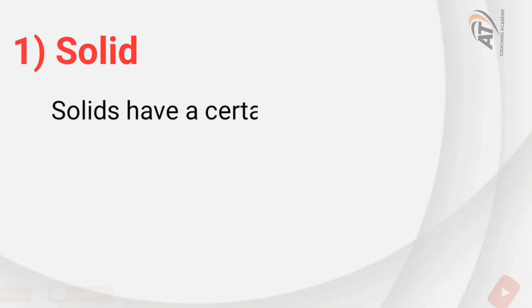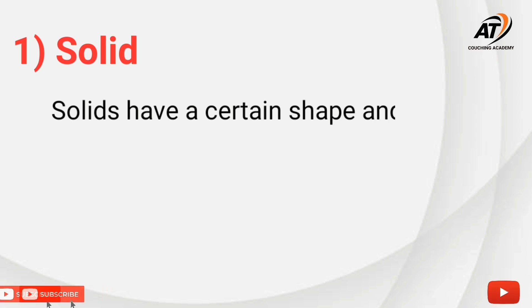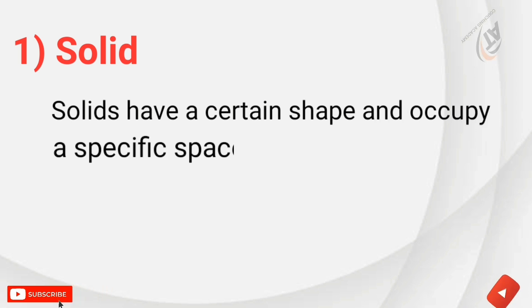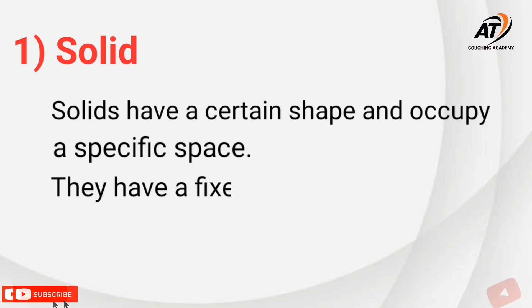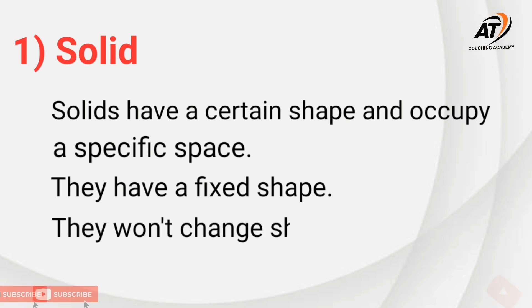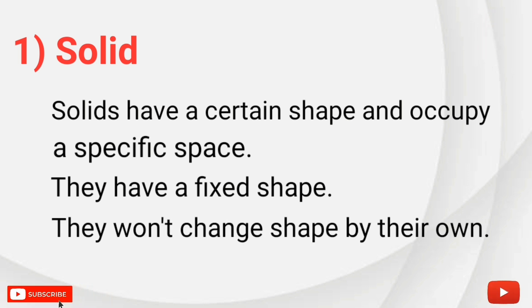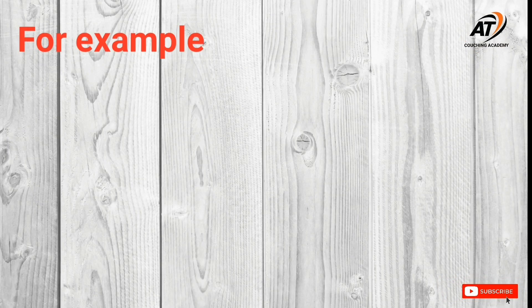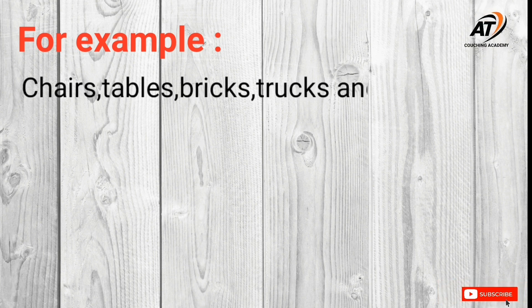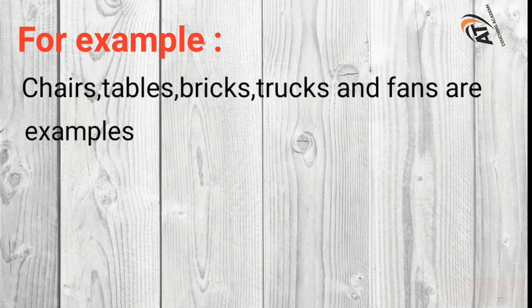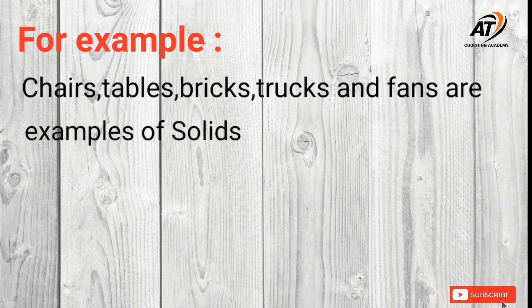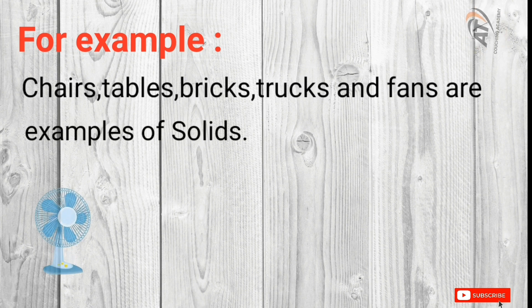Solid. Solids have a certain shape and occupy a specific space. They have a fixed shape and won't change shape on their own. For example, chairs, tables, bricks, trucks, and fans are examples of solids.